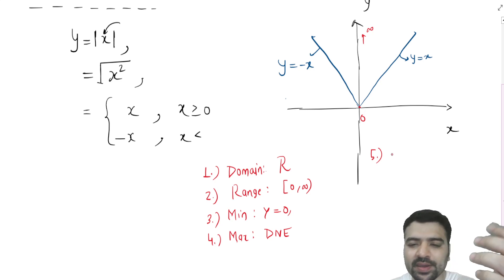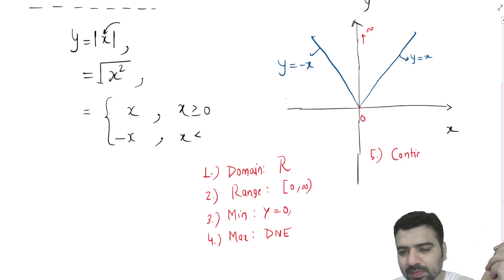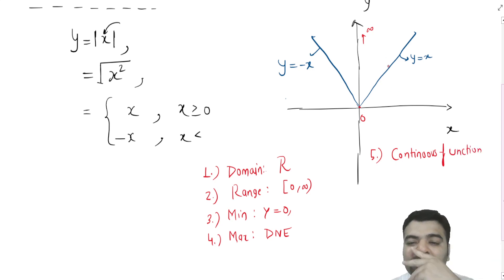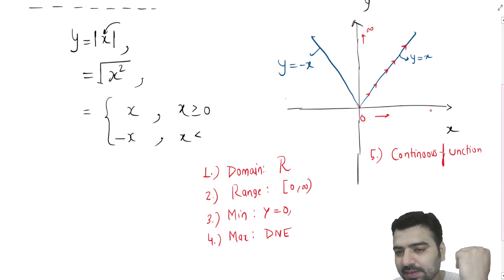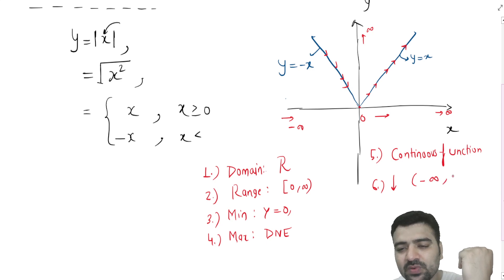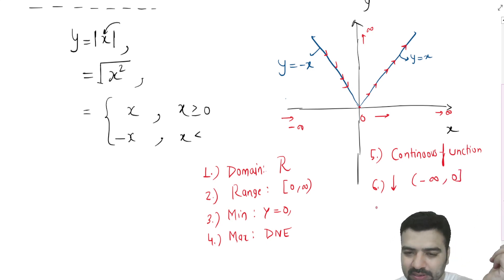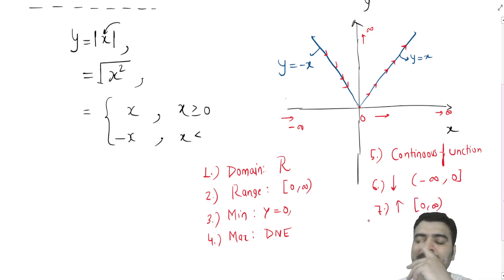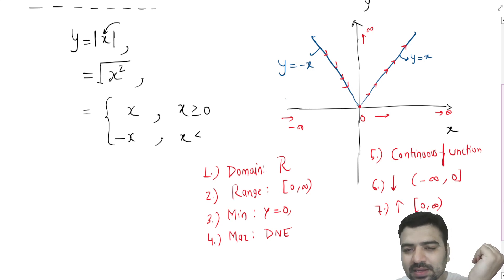It is a continuous function because there is no break in the graph. Looking at increasing and decreasing intervals: the function is increasing from 0 to +∞, and it is decreasing from -∞ to 0.